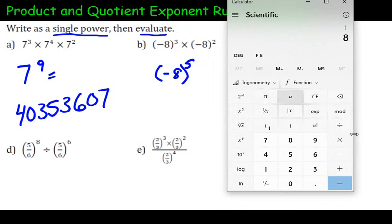So negative 8, and this calculator you have to hit the 8 first and then the negative. Negative 8 to the exponent, to the fifth power. And because it's an odd number, an odd exponent, our answer is going to be odd.